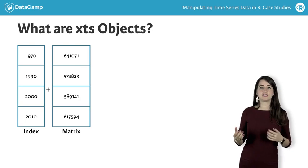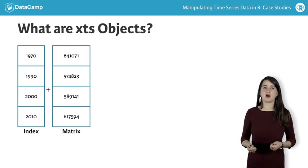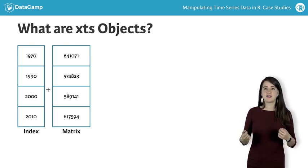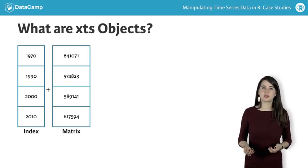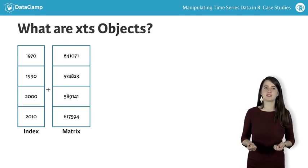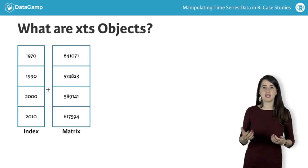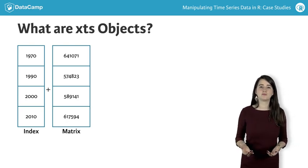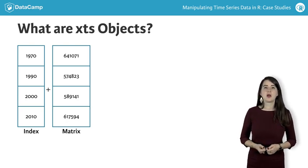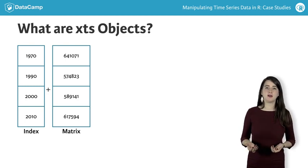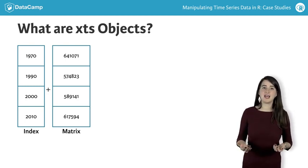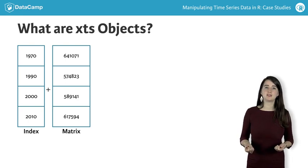Here you can see a standard matrix of numeric values in R. Let's pretend these are city population data. To produce an XDS object from this matrix, we simply attach a vector of dates — in this case, years corresponding to population measures. While a regular data frame may contain a time variable, an XDS object is indexed on time, making it easier to manipulate in interesting ways.